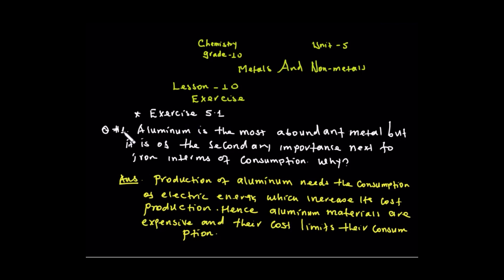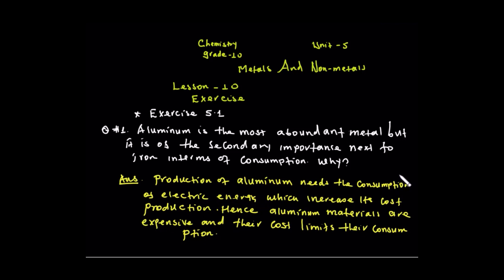Question number one: Aluminium is the most abundant metal, but it is of secondary importance next to iron in terms of consumption. The production of aluminium needs electrical energy. Aluminium is produced by electrolysis.